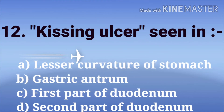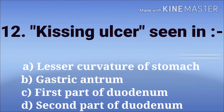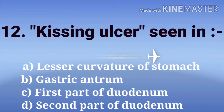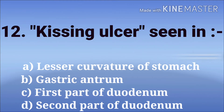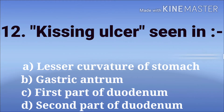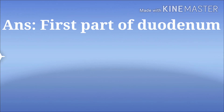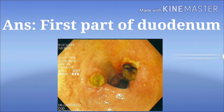The kissing ulcer seen in. The options are lesser curvature of stomach, gastric antrum, first part of duodenum, and second part of duodenum. The answer is the first part of duodenum.